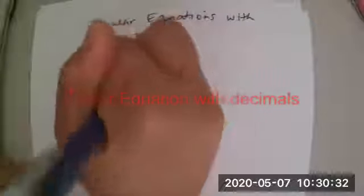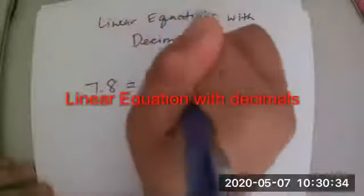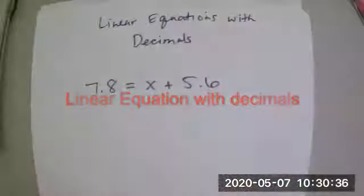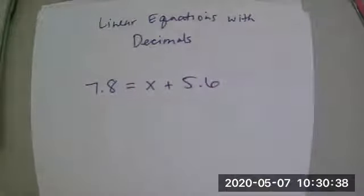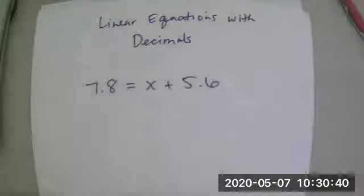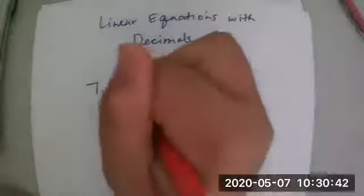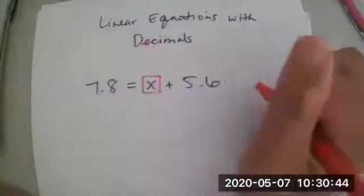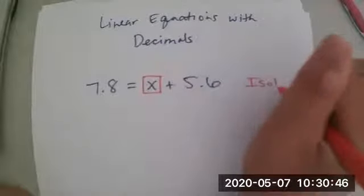7.8 equals x plus 5.6. So your first step is to box the variable, and this is going to be your visual cue to isolate the variable.